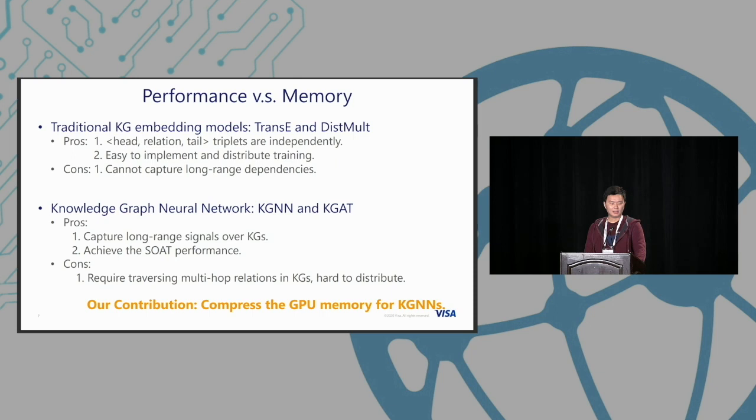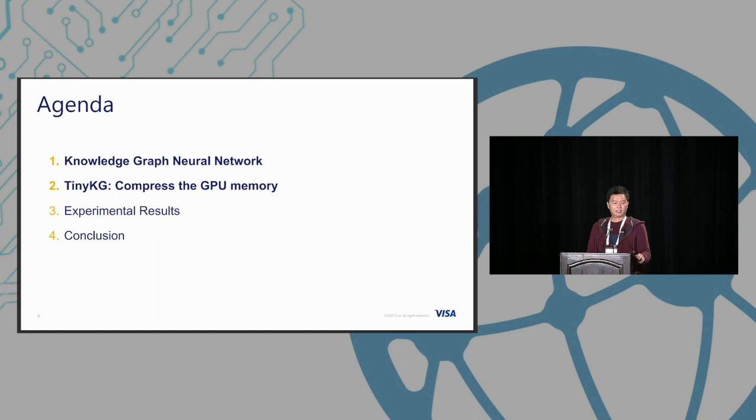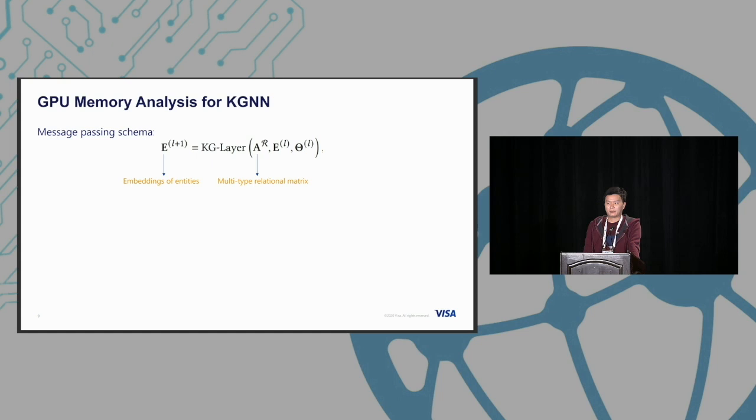Our contribution is how to compress GPU memory for KGNN. We didn't change the network architectures for the knowledge graph. We introduce Tiny KG. Tiny machine learning is now very important because we have very big data and sometimes we try to deploy models on edge devices like mobile phones, and we can save a lot of troubles like storage, limited resources, and even power.